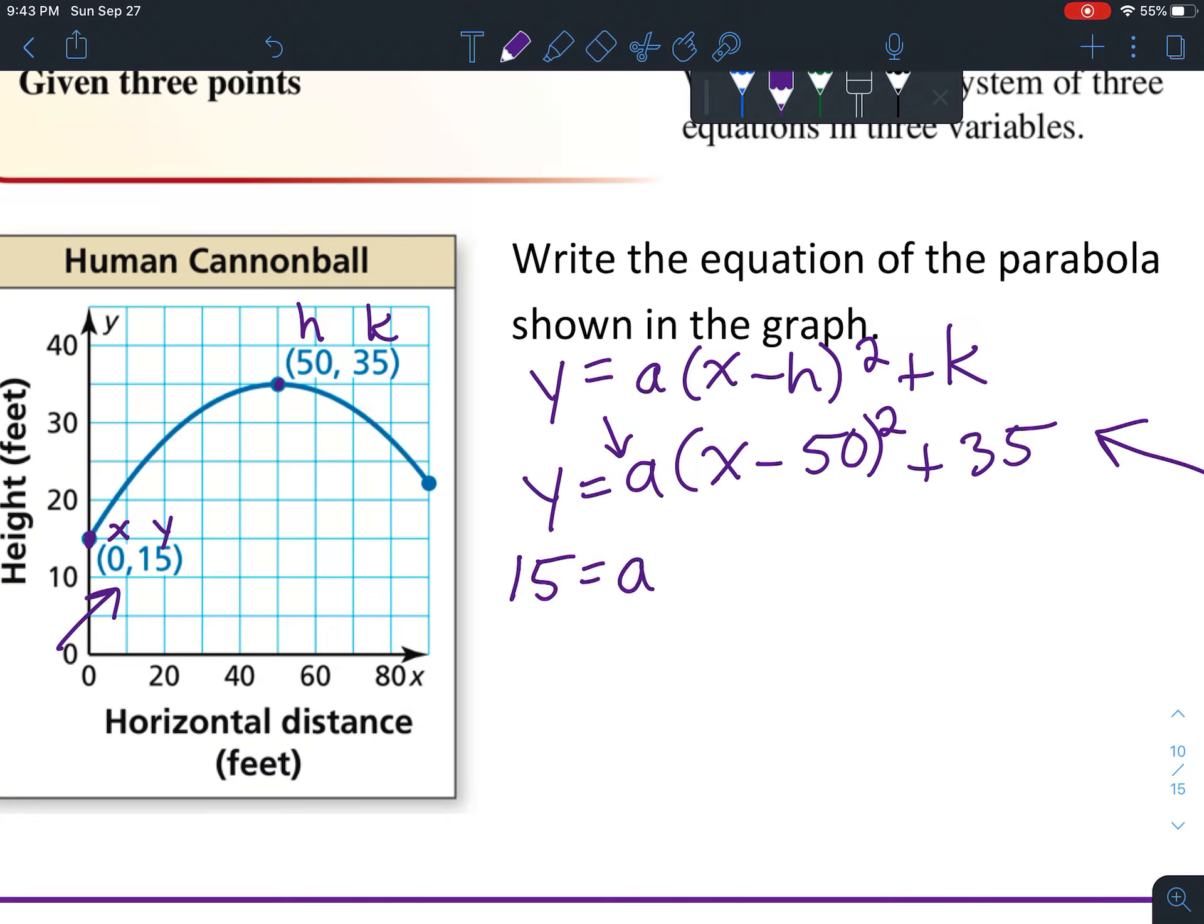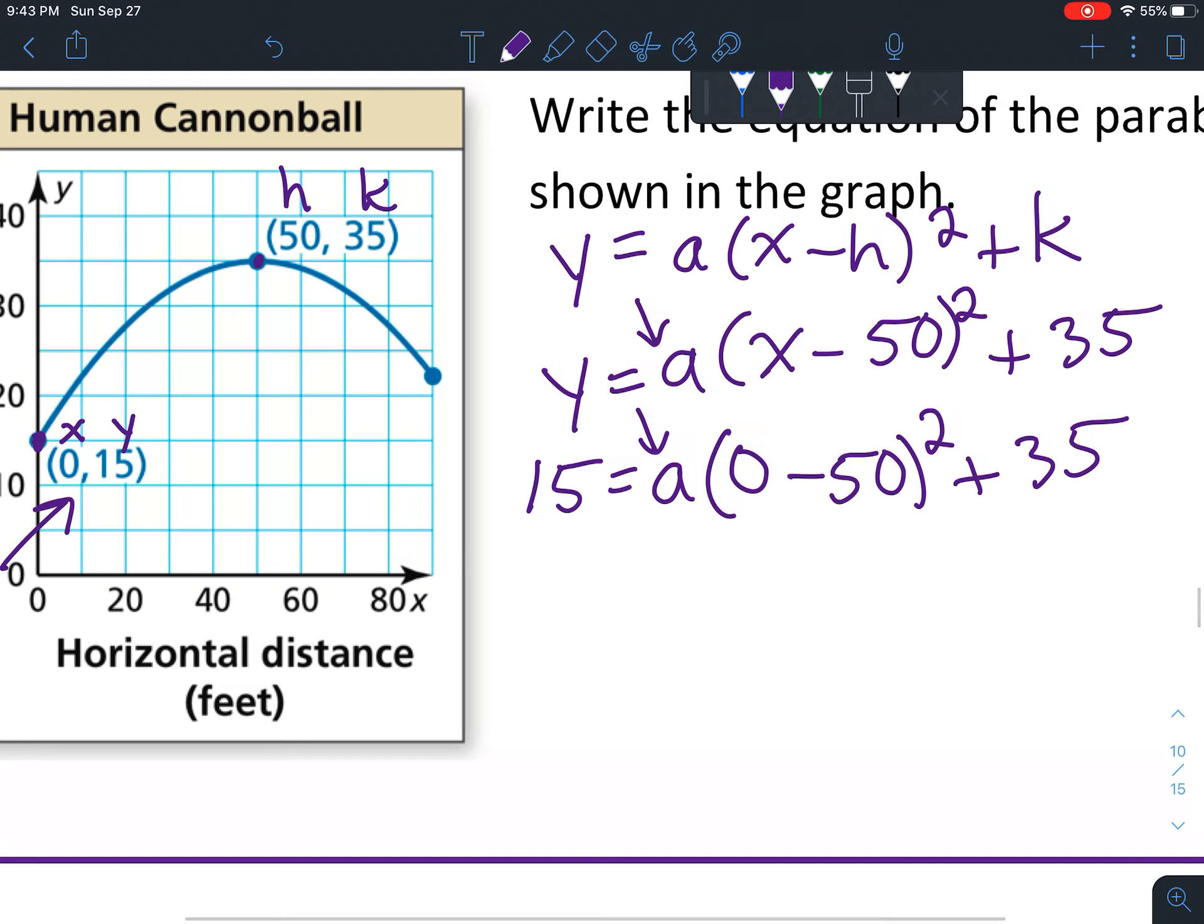Now we only have one unknown and we have an equation, which means we can solve it. 0 minus 50 is negative 50. Order of operations says I have to square something first before I do anything else, so negative 50 times negative 50 is 2500.